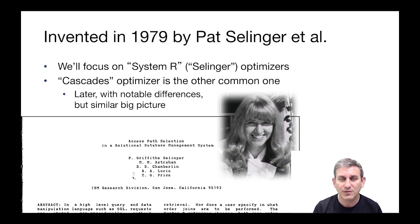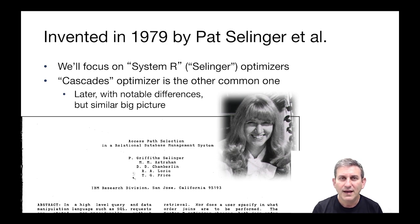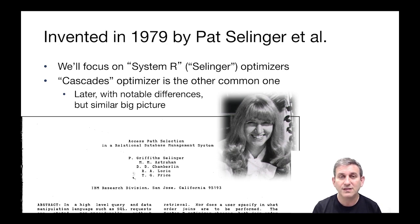The System R and Cascades optimizer architectures are the two most common that you'll hear about when talking to people who build database systems. Cascades came much later and has notable differences from the Selinger optimizer, but is pretty similar in the big picture — learning either is enough to understand the other. The System R optimizer is the original design and a bit easier to understand than Cascades, so we'll focus on the System R or Selinger optimizer in our discussions.